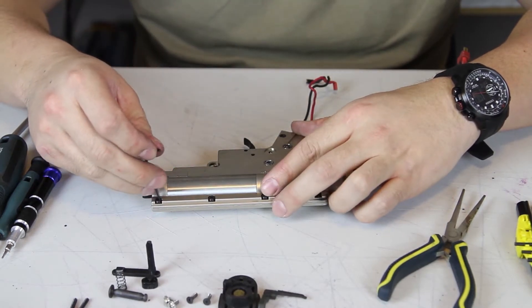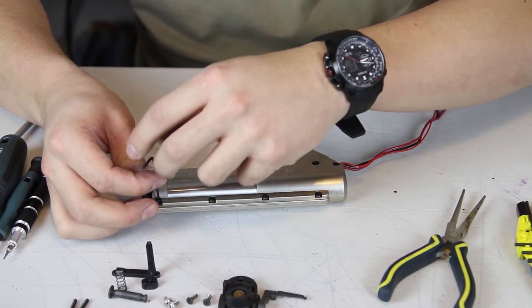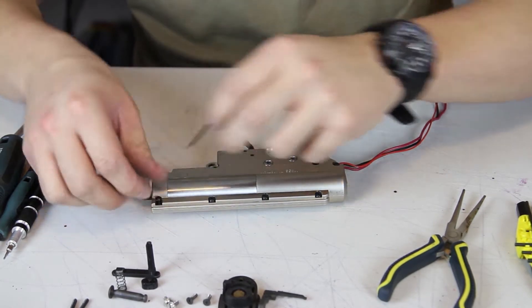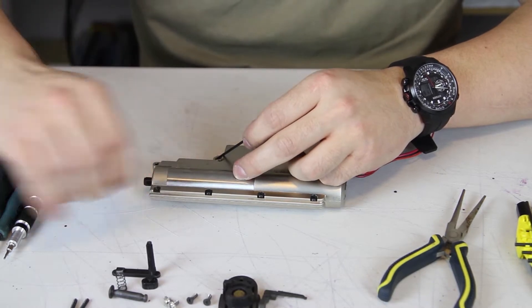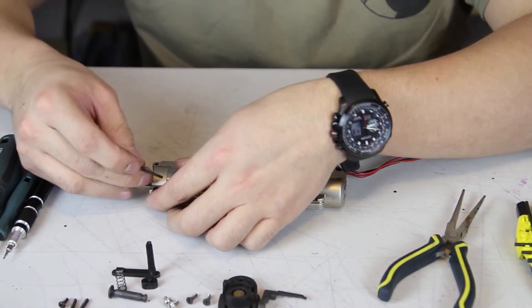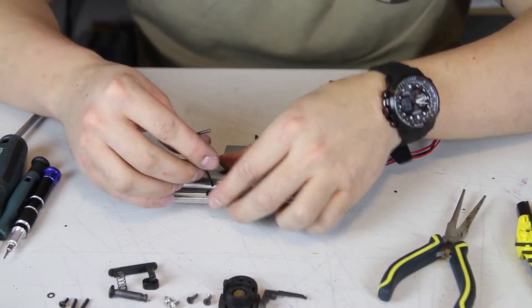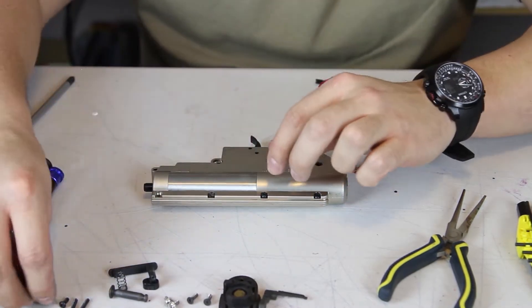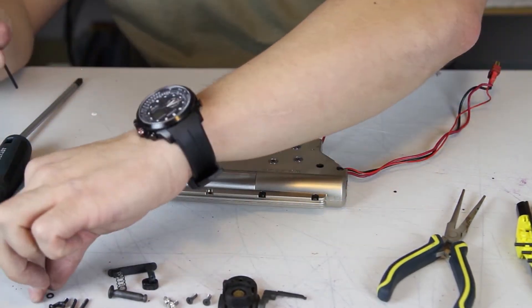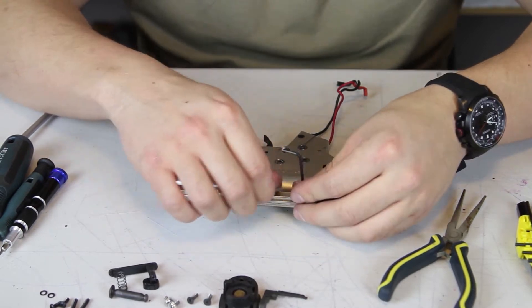Once you have the gearbox shell taken out of the lower receiver, it will look like Jason's does now. The first thing you need to do is take off all the screws keeping the gearbox closed. You should loosen them all first before taking them off completely, just in case the gearbox starts to pop open. It is extremely important to use the correct size Allen key, or in some cases a 2.0 Phillips head screwdriver. If you use the wrong size tool, you will likely strip the screw, which will severely complicate things for you.